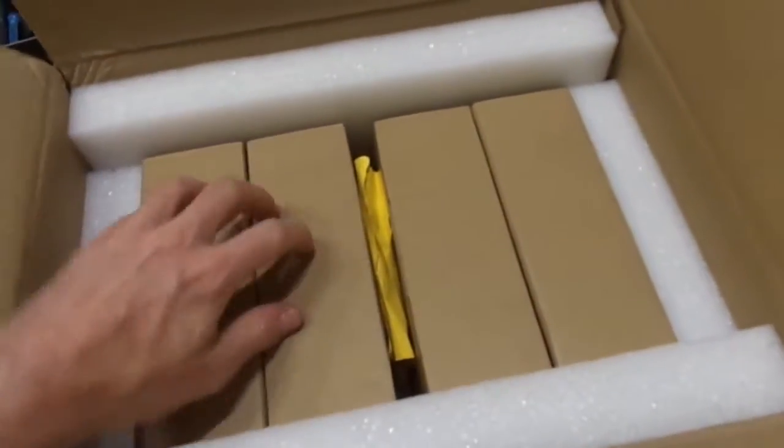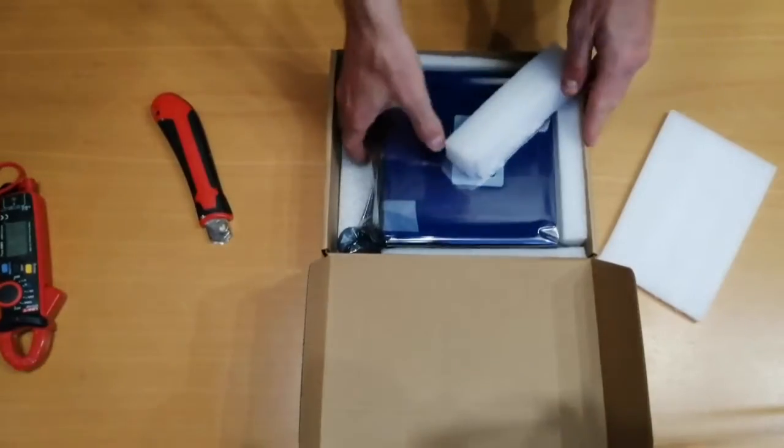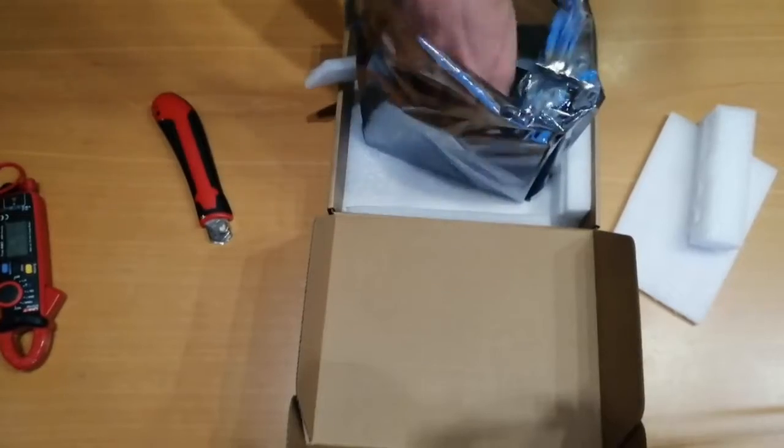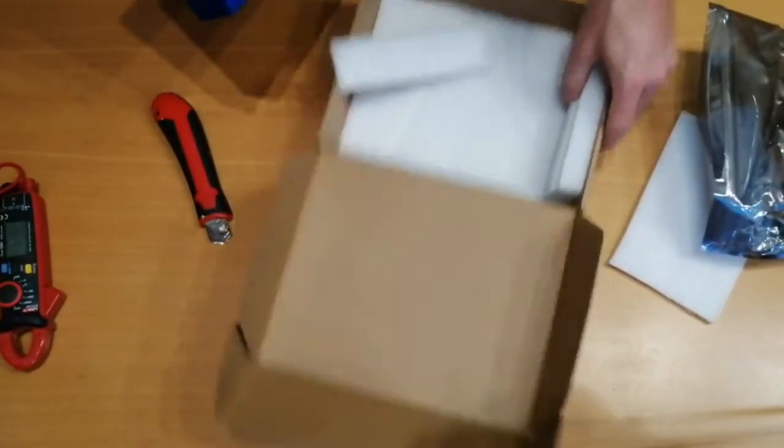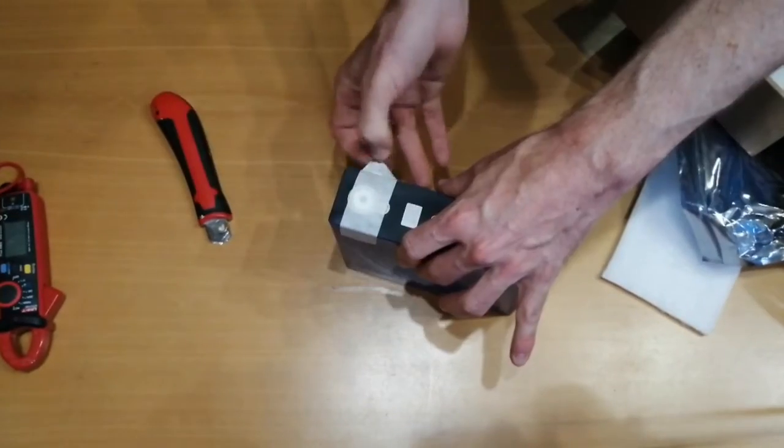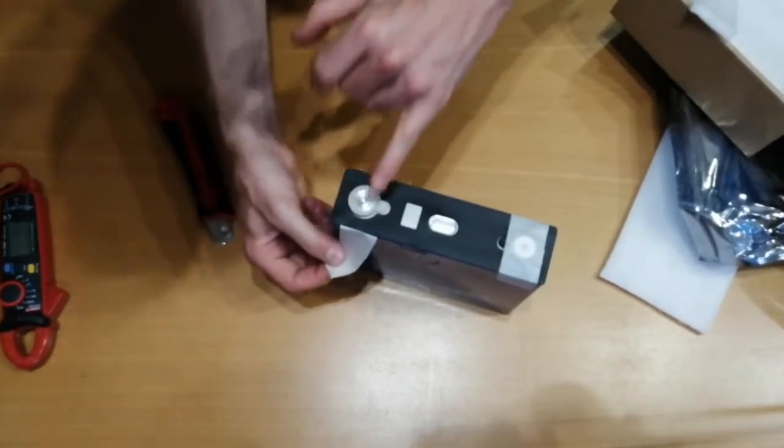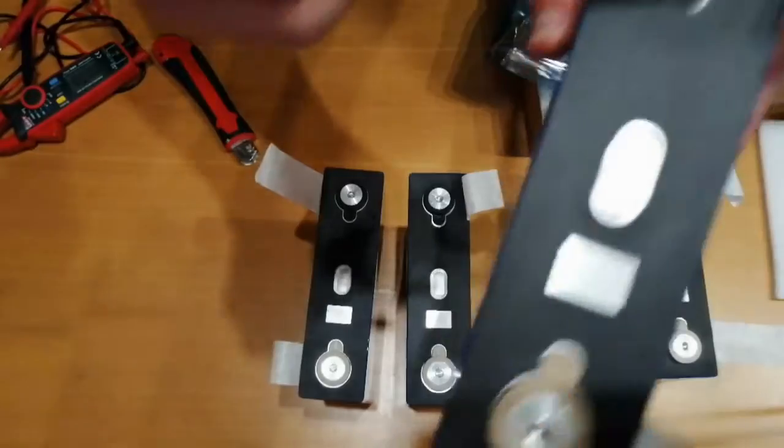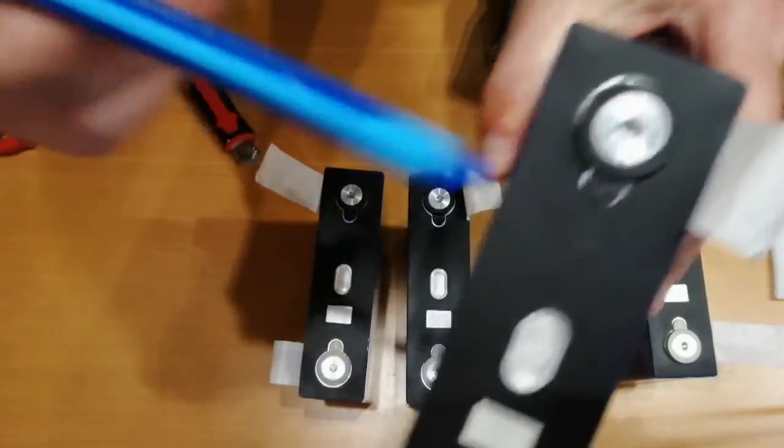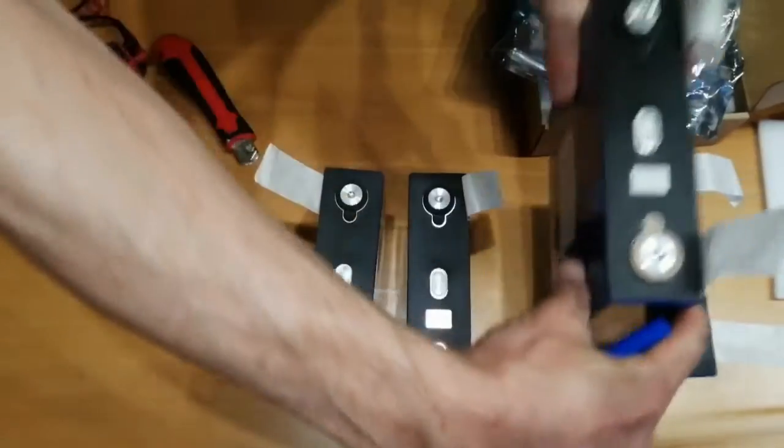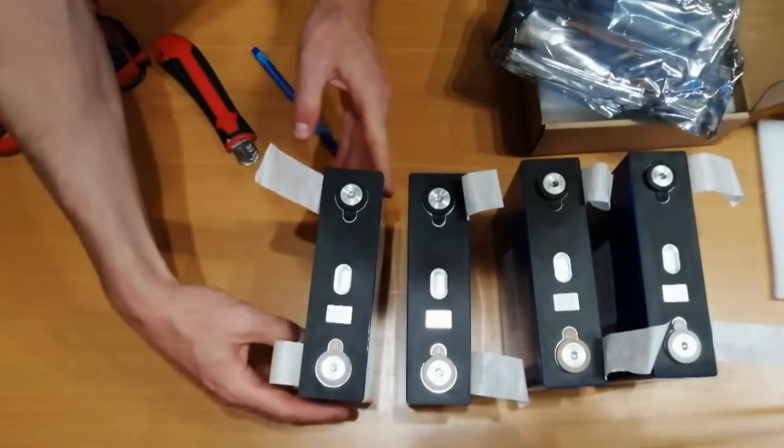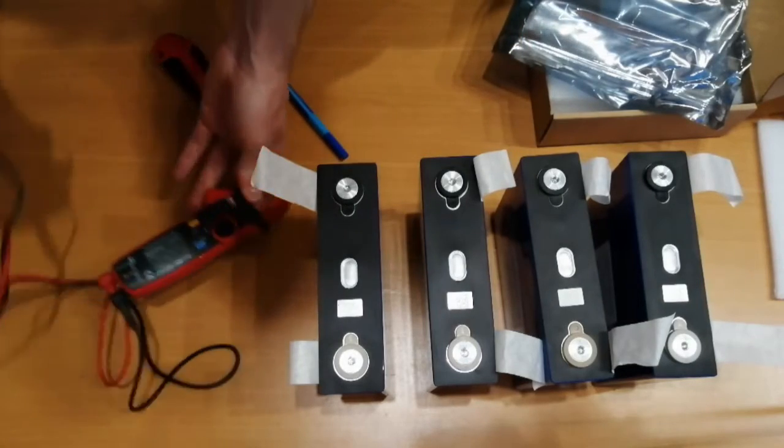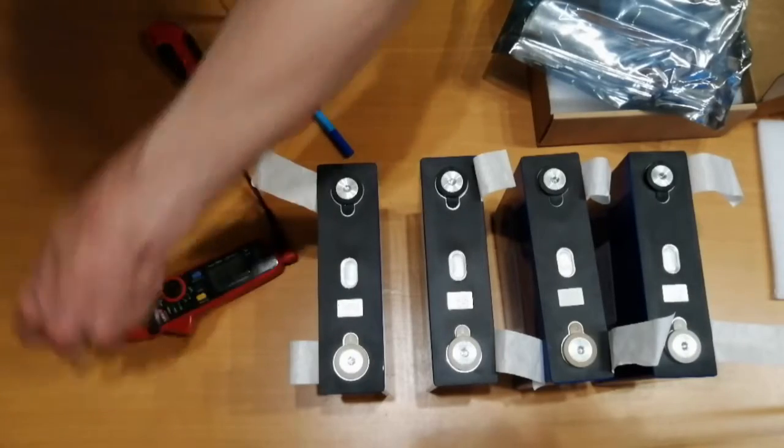Even the individual packages of the cells had foam inside. They were really well packaged so I was quite happy with that. There are also no scratches, they look really brand new with original QR codes. The only small difference that I noticed is this cover here, so this cover is a different one. Just one cell, there is the plus symbol missing so it's a different plastic lid cover of the pole.